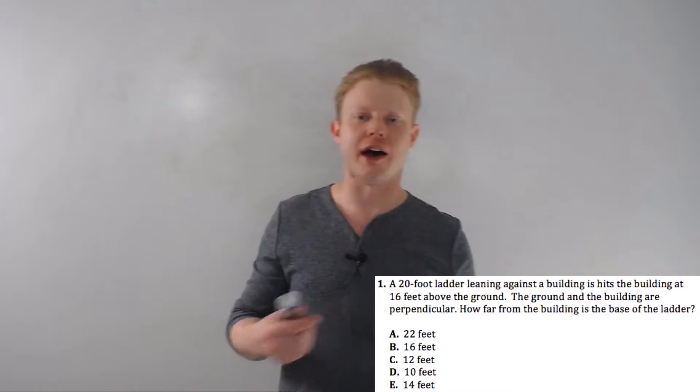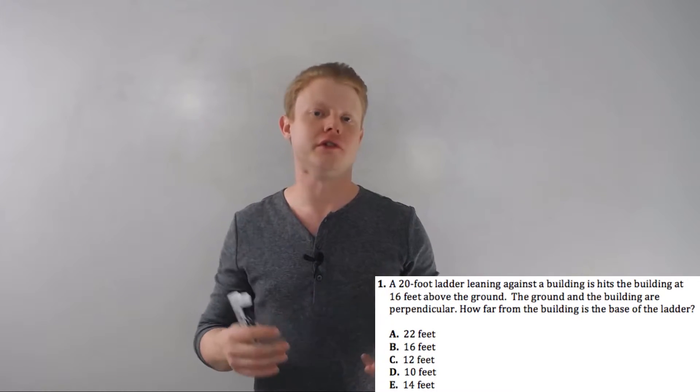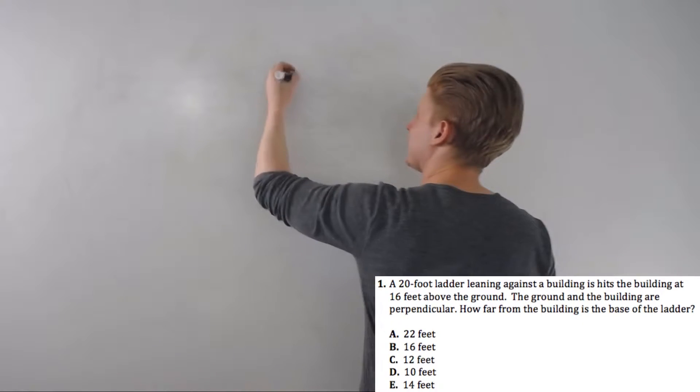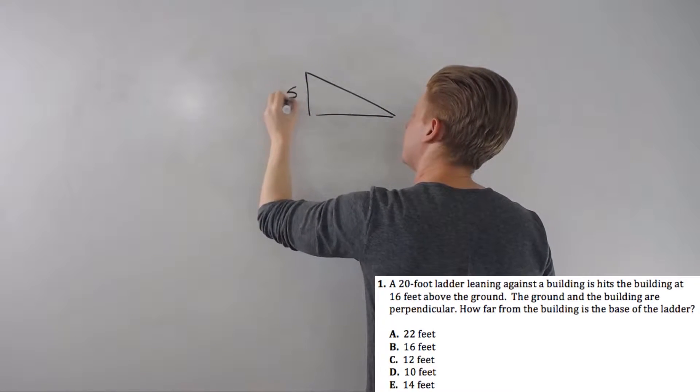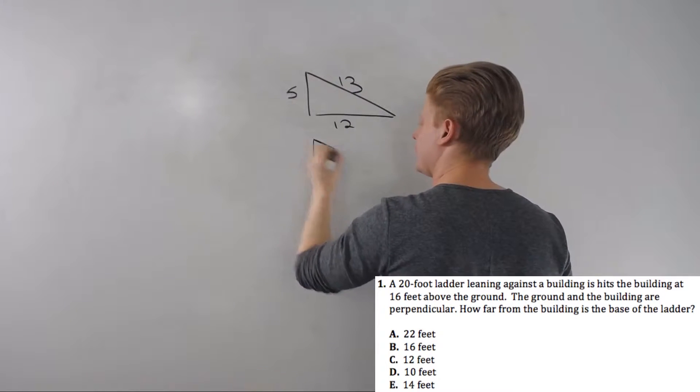There's nothing really special about side-based special right triangles, other than the fact that they have all integers. All the sides have integer lengths—there's no fractions, no decimals. There's a whole bunch of them, but I only care about two.